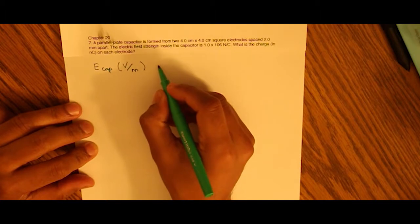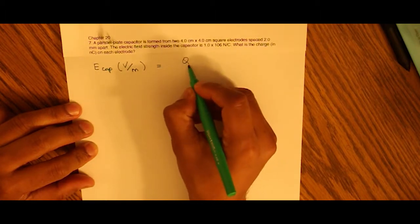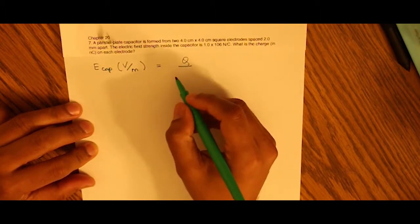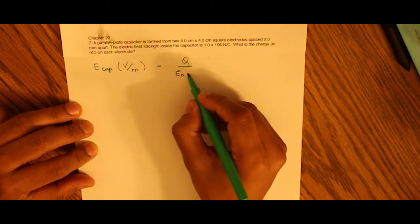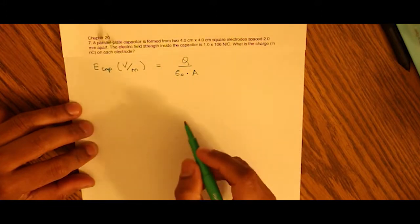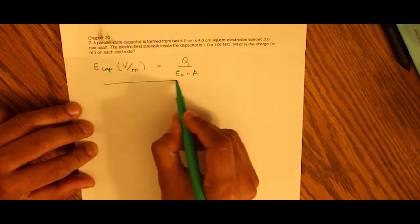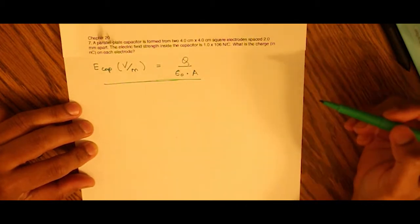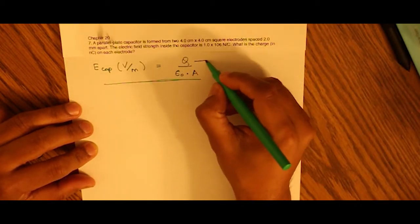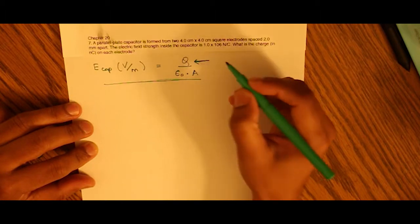...is the charge divided by the permittivity of free space, denoted by ε₀, times the area of the capacitor. This is the formula for electric field of a capacitor. We have to find out the charge on each of the electrodes.